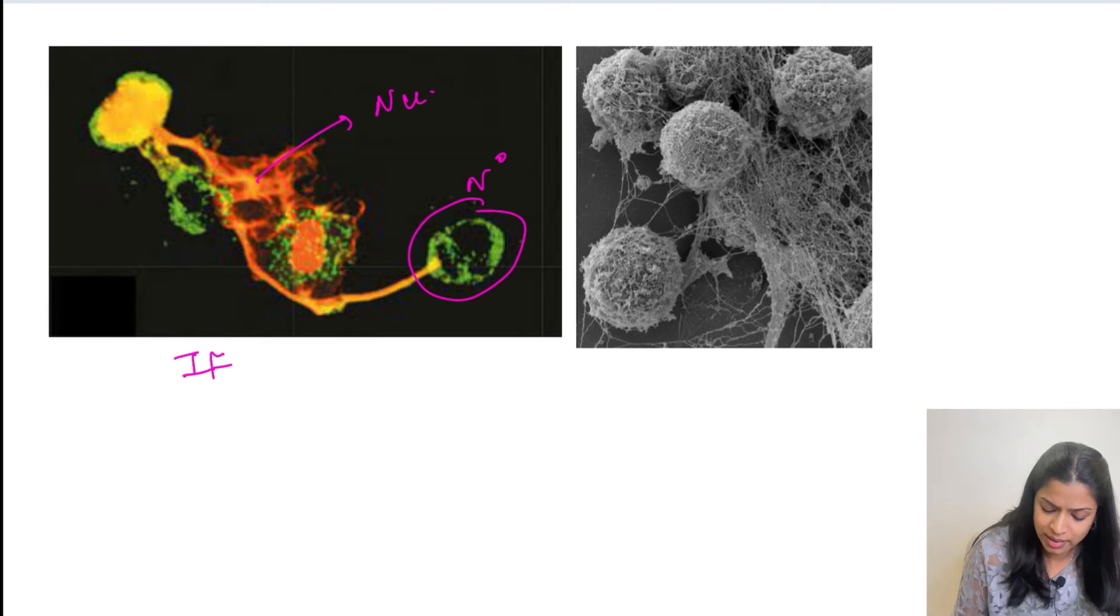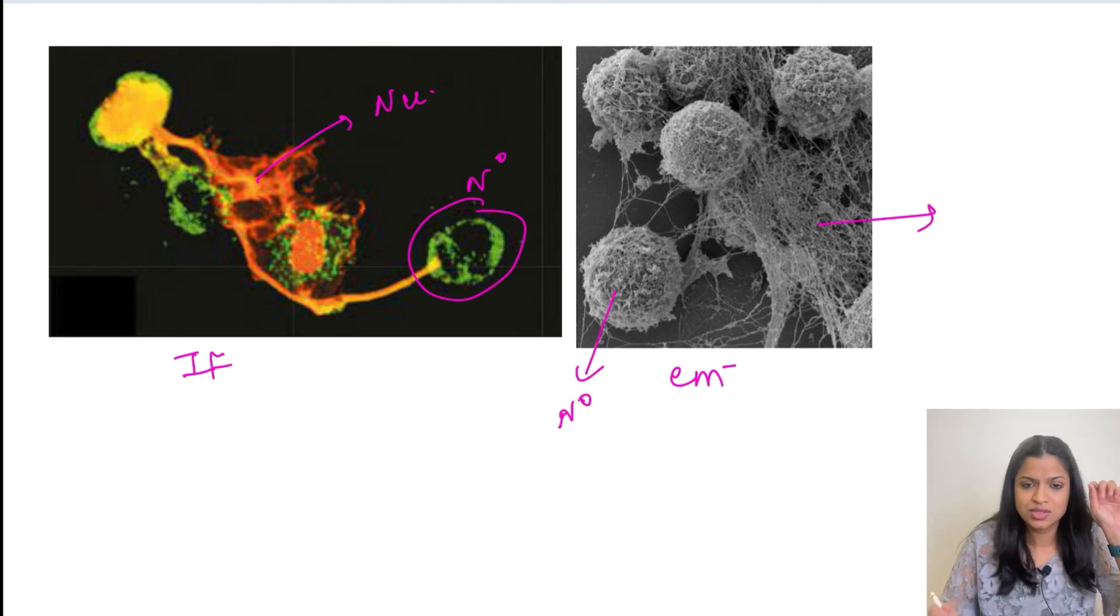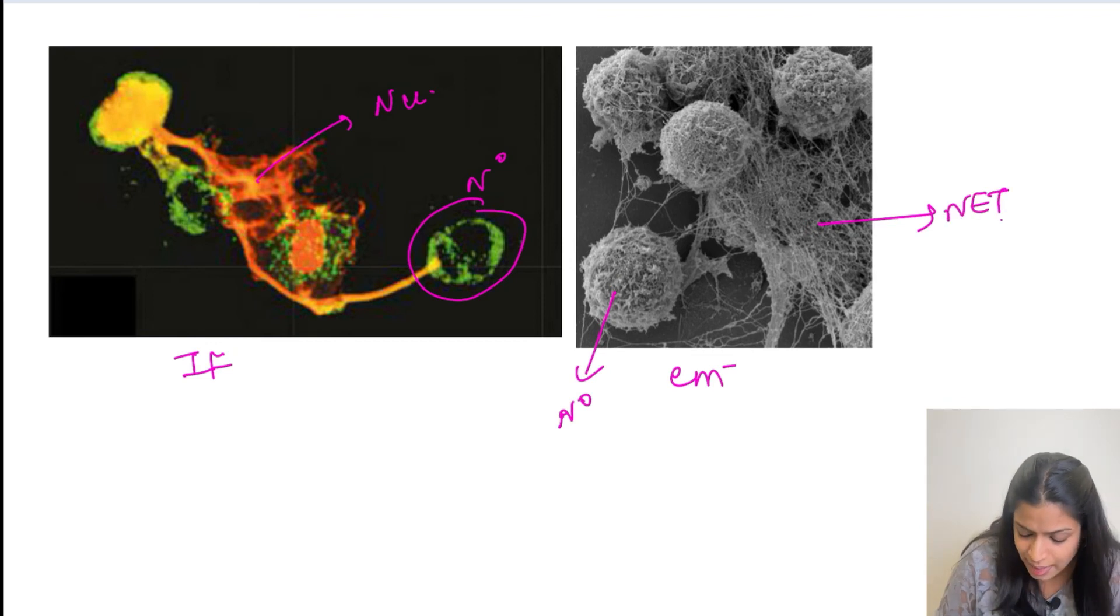So the second image is the electron microscopic image of NETs. Here again these round cells are the neutrophils while these web-like structures which have this granular appearance, so these are the NETs.